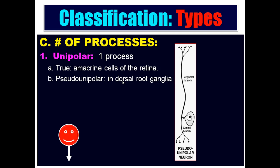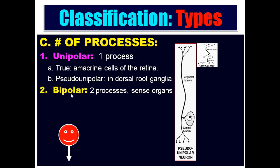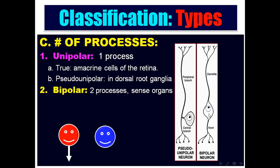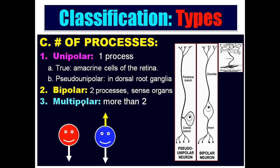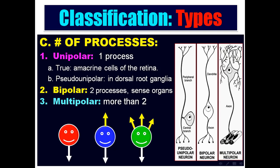Bipolar neurons have two processes — one axon and one dendrite — and are present in sensory organs: the nose, the retina, and the inner ear, such as in the spiral ganglion and cochlear ganglion of the cochlear nerve. The third and commonest type is the multipolar neuron, which has one axon and many dendrites — more than two processes.